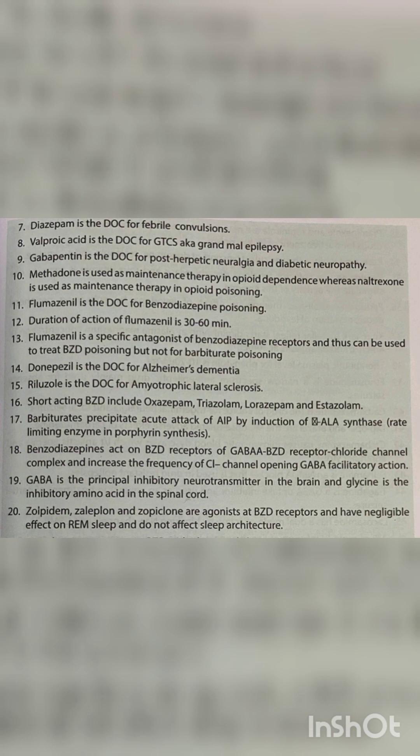Benzodiazepines act on benzodiazepine receptors of the GABA-A benzodiazepine receptor chloride channel complex and increase the frequency of chloride channel opening, exerting a GABA facilitatory action. GABA is the principal inhibitory neurotransmitter in the brain and glycine is the inhibitory amino acid in the spinal cord.